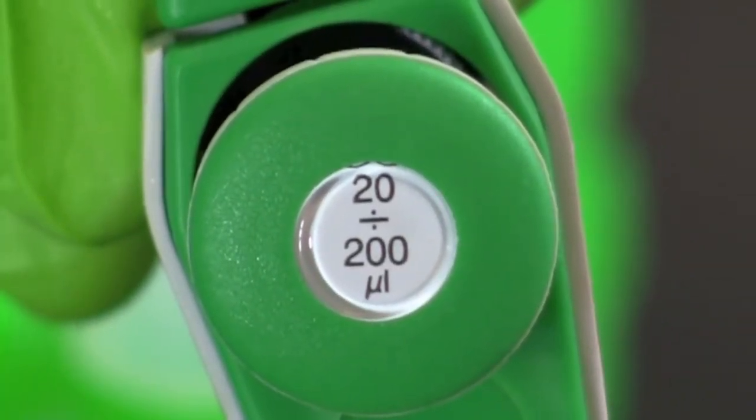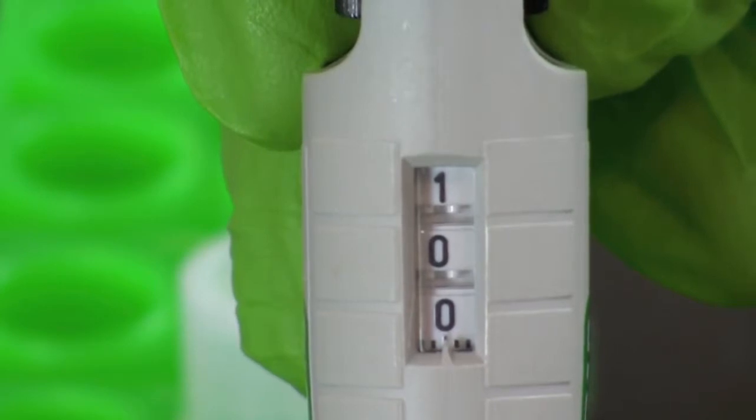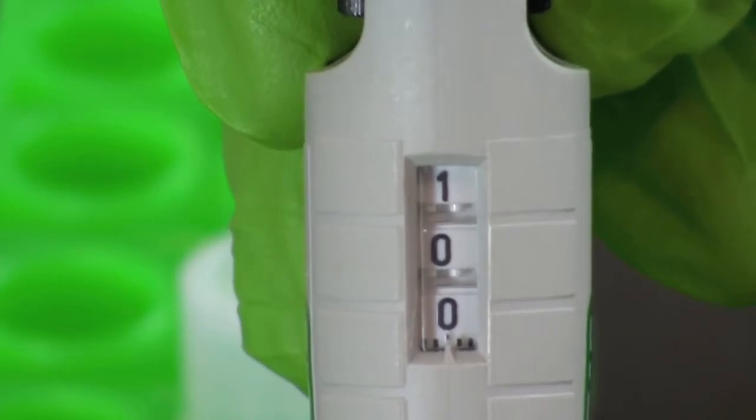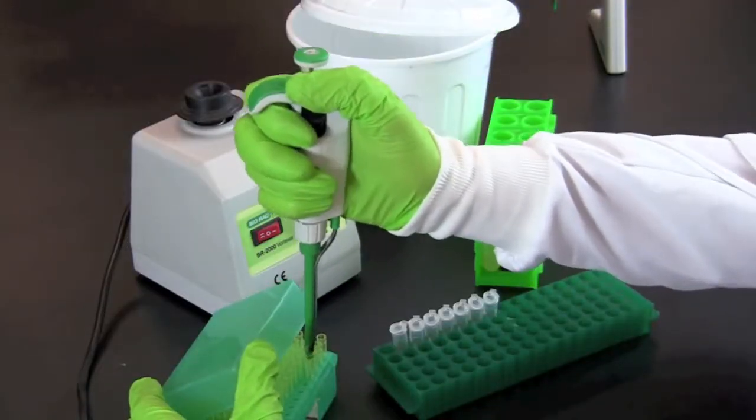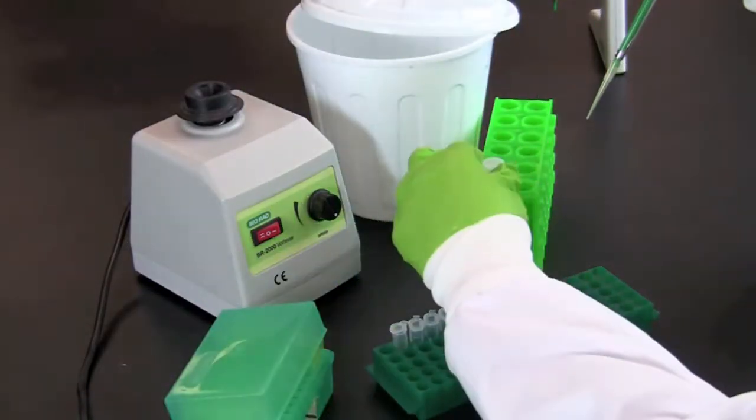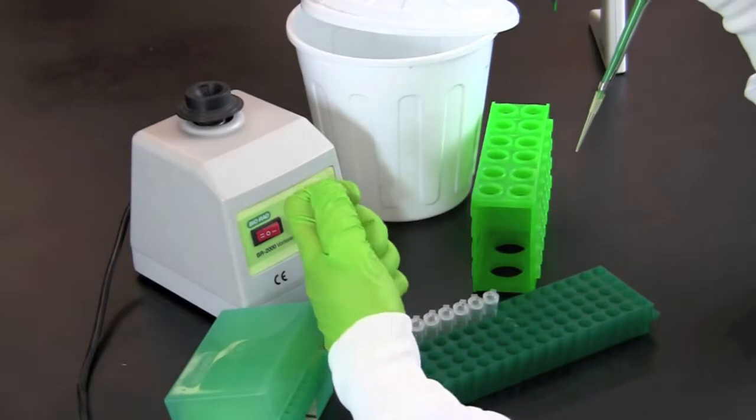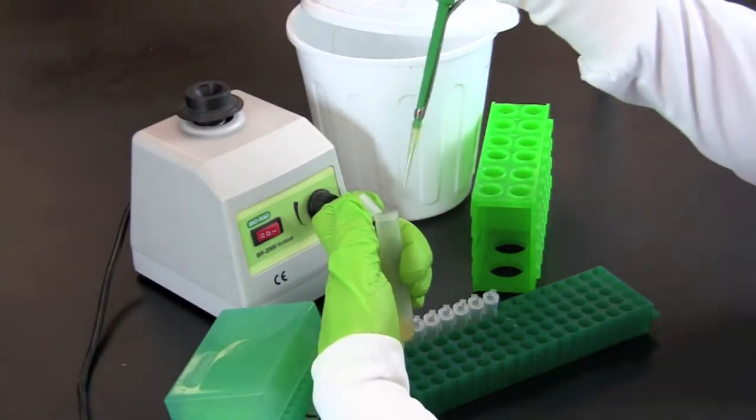Next, using a 20 to 200 microliter micropipette set the volume to 100 microliters. Using aseptic technique, pipette 100 microliters of bacteria culture into the microcentrifuge tube labeled 10 to the first.